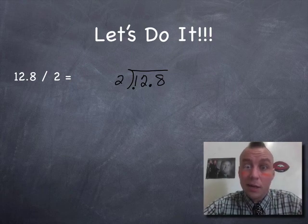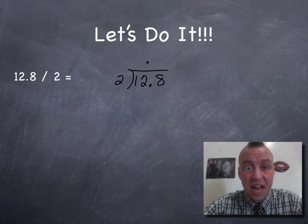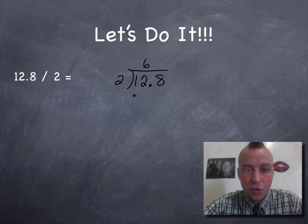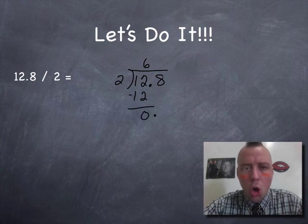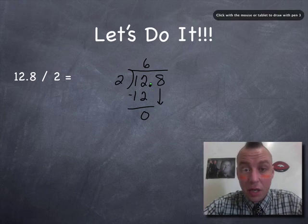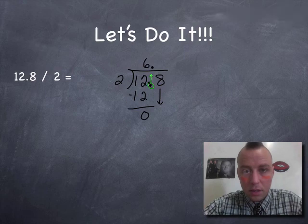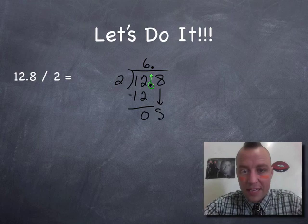How many times does 2 go into 1? It doesn't. How many times does 2 go into 12? Well, it goes in 6 times because 6 times 2 is 12. 12 minus 12 is zero. So we're going to drop down that 8. But before we drop down that 8, here's the new rule. We're going to take this decimal point and we're going to pop it up top. So you see how it's right next to the 12 here, we're going to move it up right next to the 6. We're going to drop that 8 down.